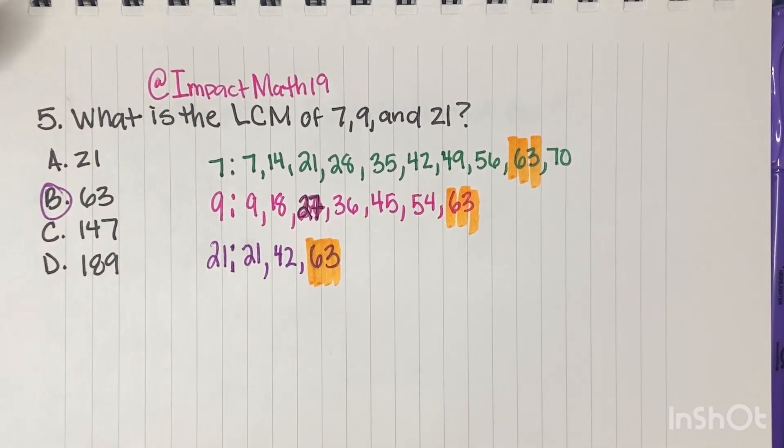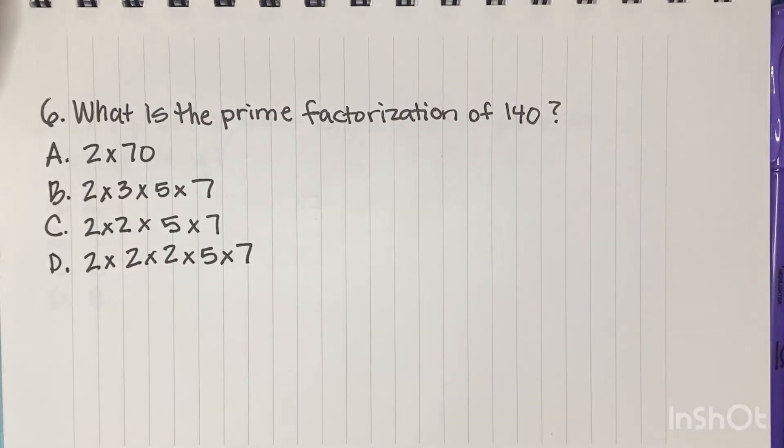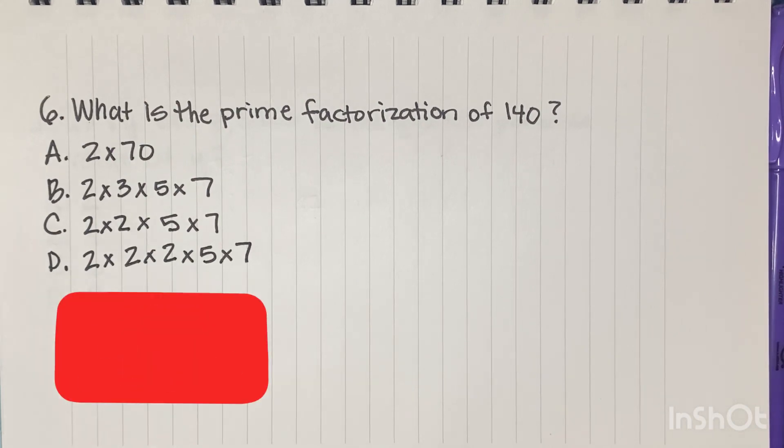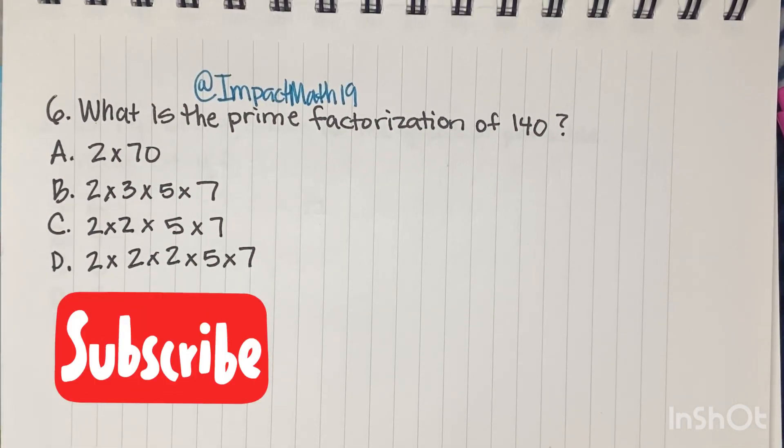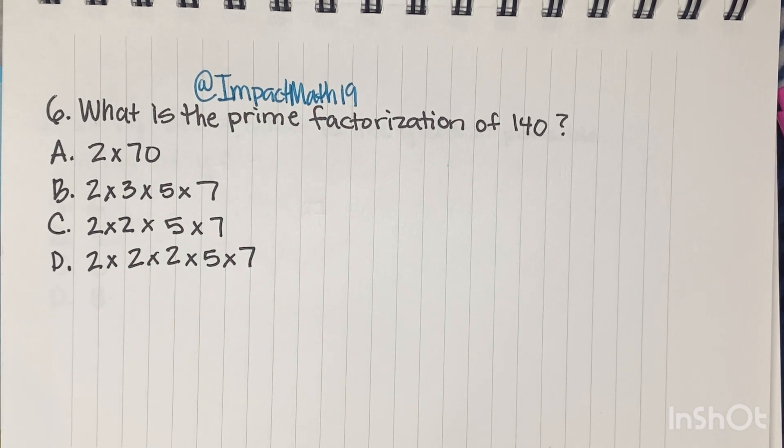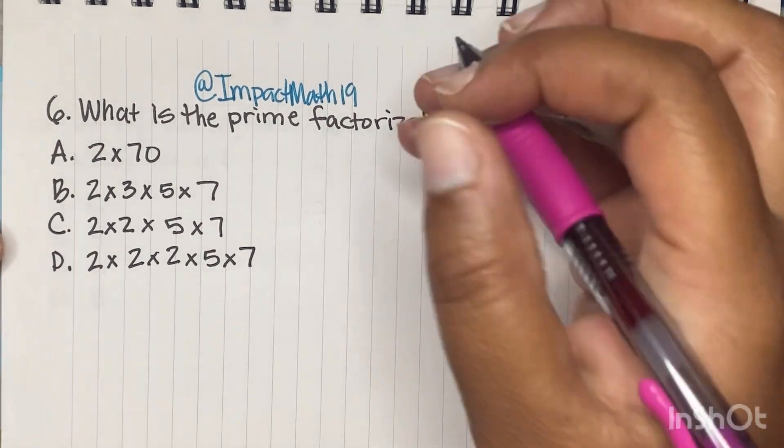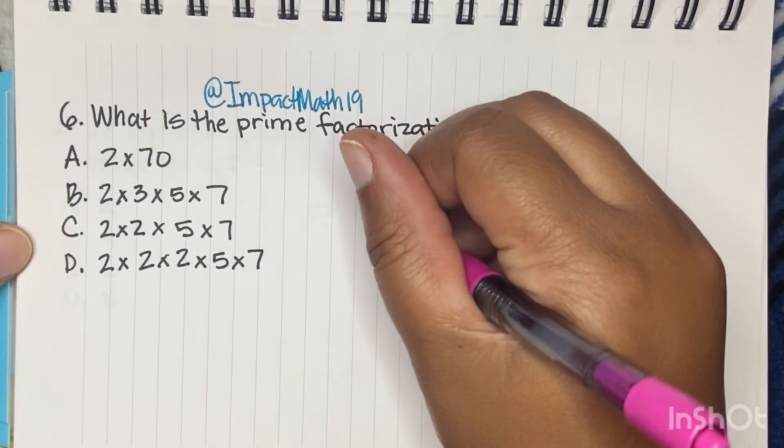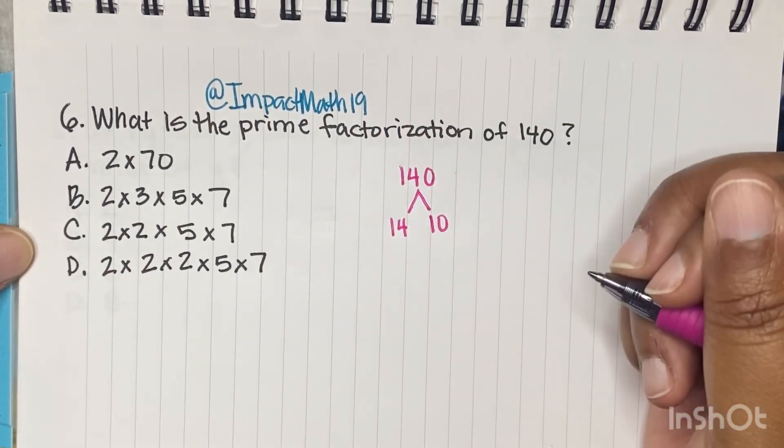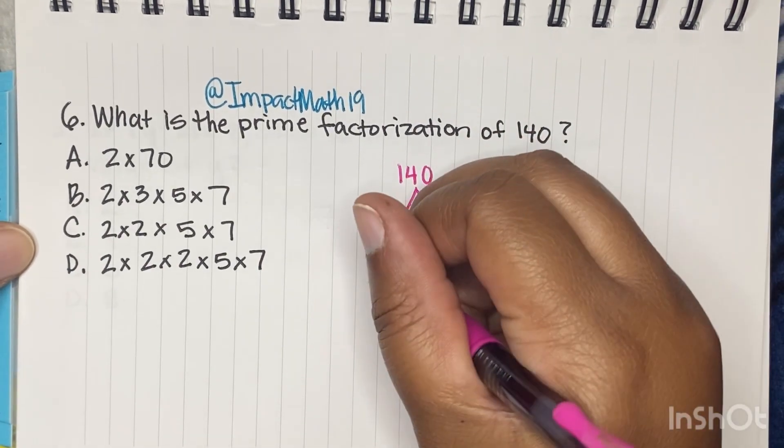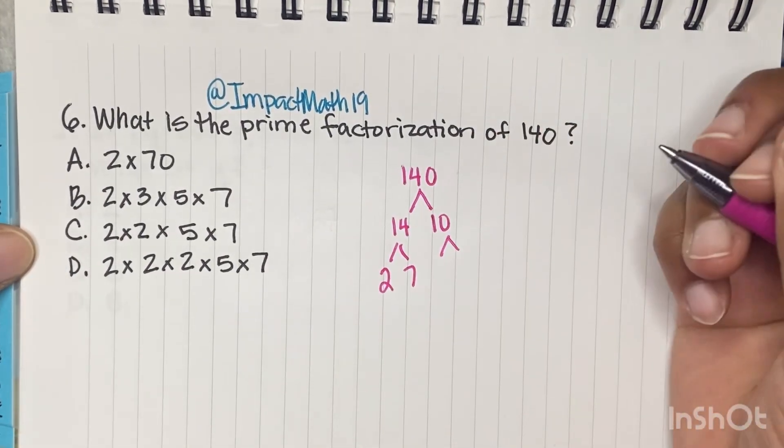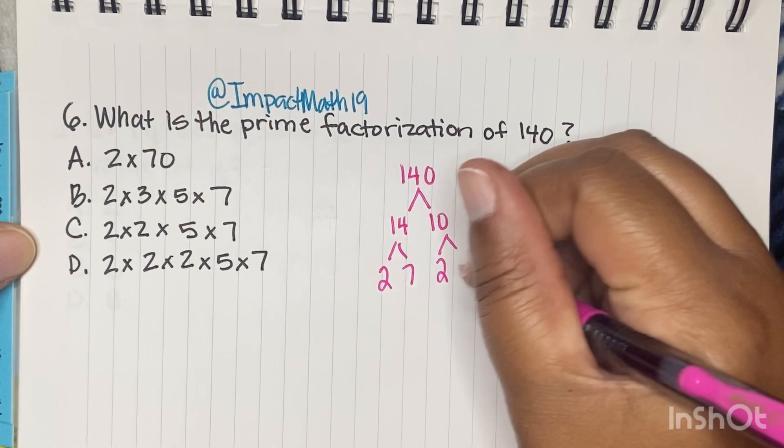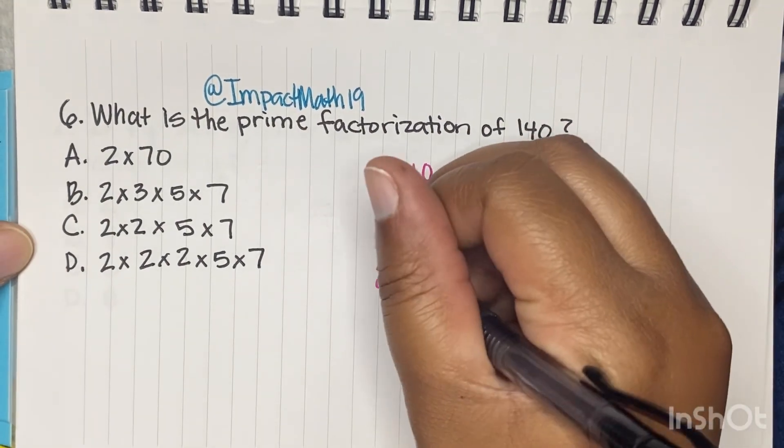All right. Let's get into this prime factorization to make sure we have it. What is the prime factorization of 140? Hopefully you pause this video right here and you try to work it out and then see if you get it right. So again, we're going to start with 140. We're going to do what times what gives us 140. Well, 14 times 10 gets us 140. And then what times what gets us 14? Two times seven. And what times what gets us 10? Two times five.